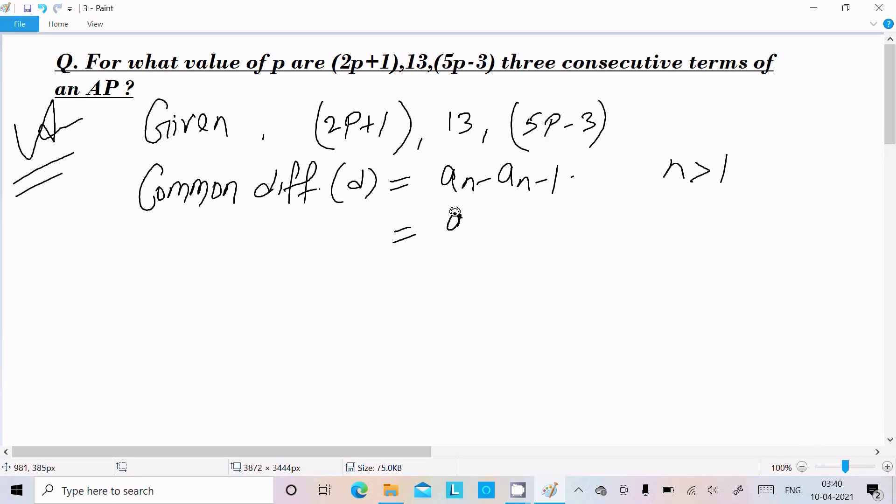So suppose here if I put n value 2, so this is a2, here 2 minus 1 is a1, n equal to 2. And if I put here n value 3, so this is a3 and a3 minus 1 is a2. Now common difference are same.